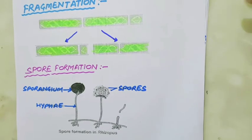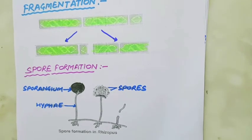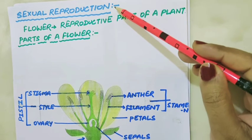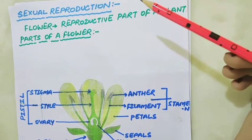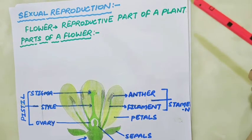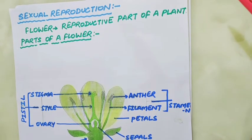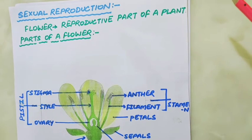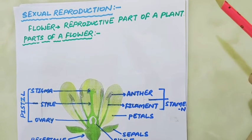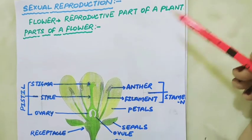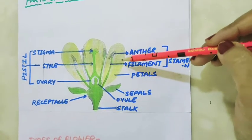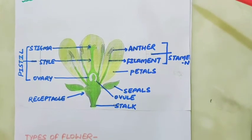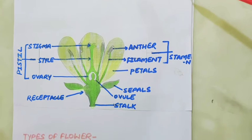Some other plants like mosses and ferns also reproduce by spore formation. The second method of reproduction is sexual reproduction. New plants are produced with the help of seeds, and two parents are involved in this process. Flowers are the reproductive parts of a plant, and they help the plant in sexual reproduction, producing fruits and seeds.